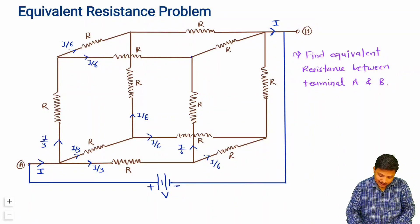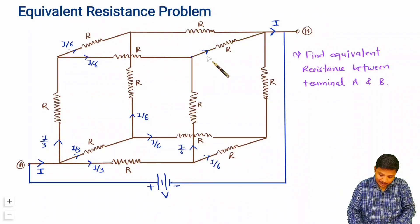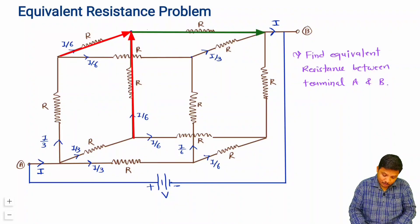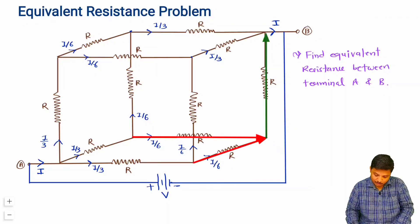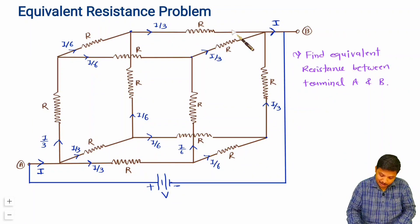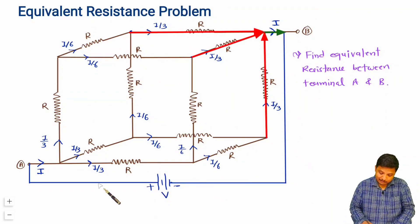At the nodes near terminal B, the two I/6 currents recombine: I/6 plus I/6 equals I/3. This happens at each of the three nodes adjacent to B. Then all three I/3 currents add together, giving total current I flowing out through terminal B.